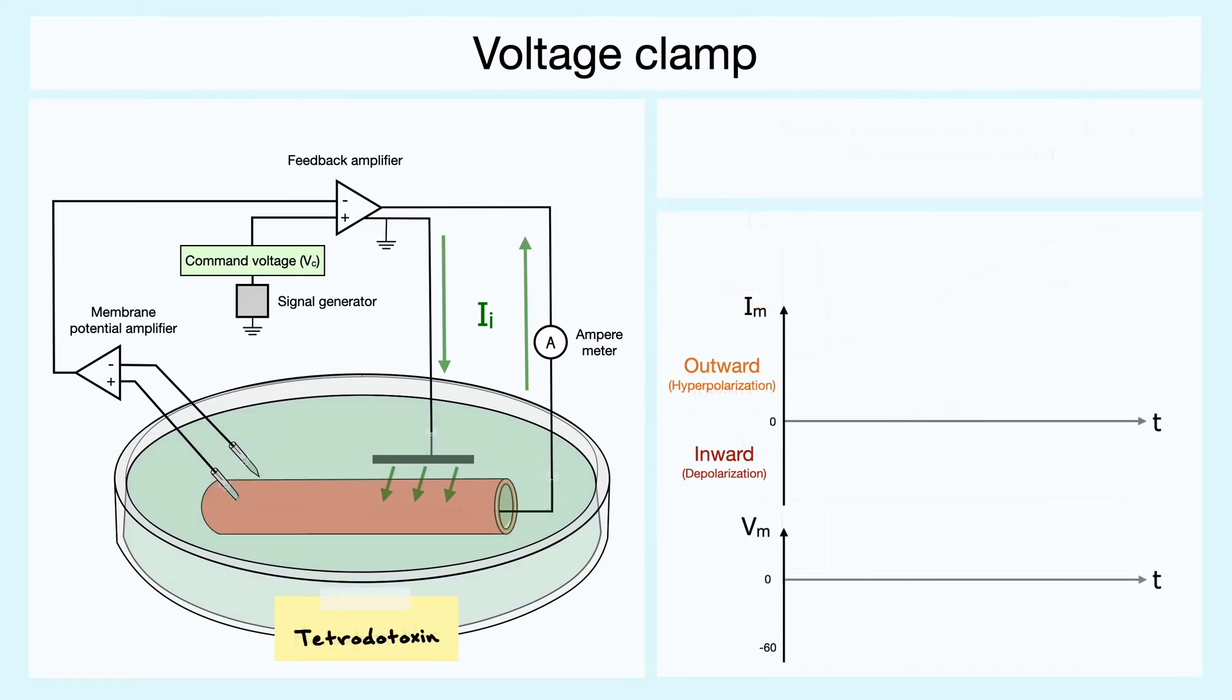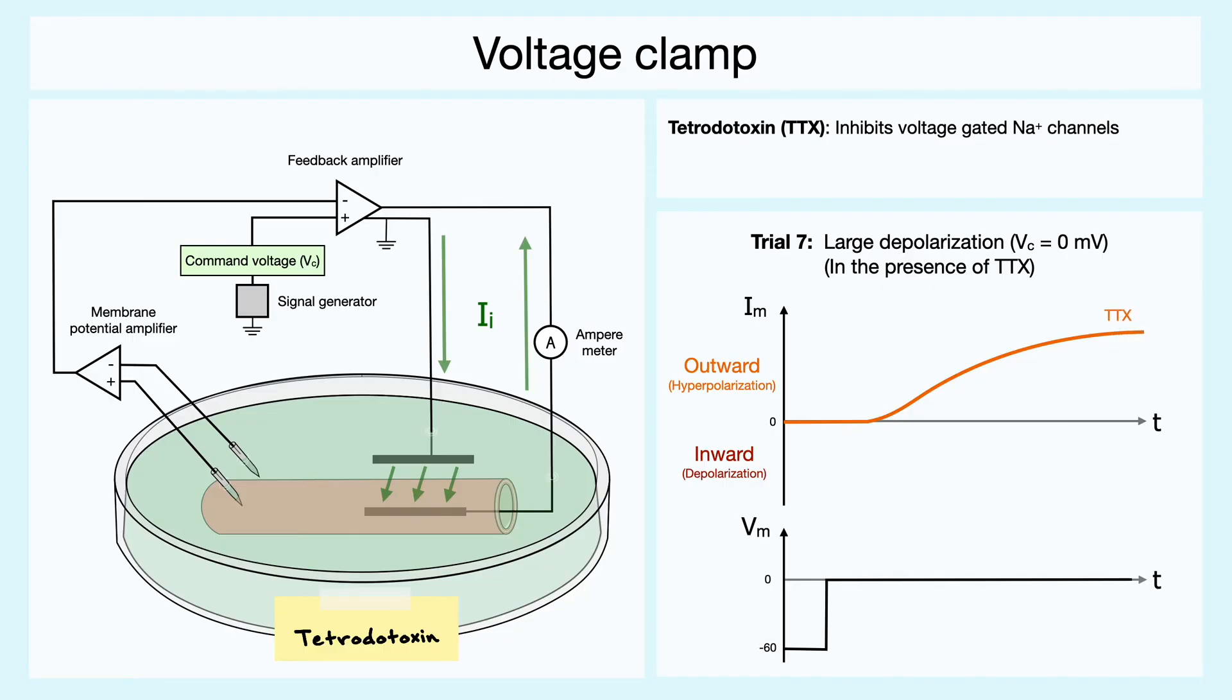But one very compelling proof comes from studies using pharmacological products. Indeed, when one performs the voltage clamp with tetrodotoxin, which is a toxin that blocks voltage-gated sodium channels, you can see in the results that only the delayed outward current is recorded. You will also notice that we are not considering the capacitive current anymore, because it doesn't give any relevant insights on how the action potential works.